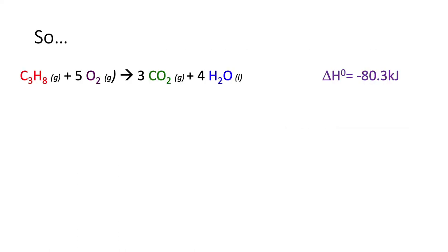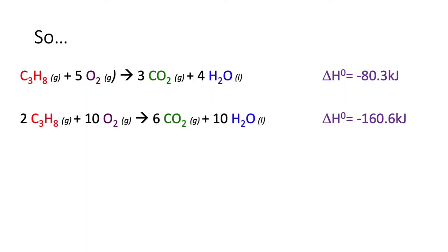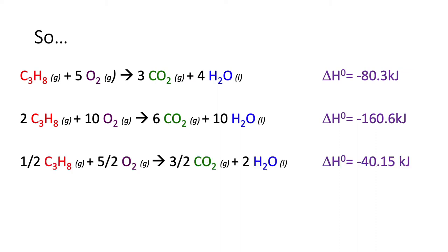Going back to the propane equation—one mole of propane reacting with five moles of oxygen to give three moles of carbon dioxide and four moles of water—the enthalpy of this reaction is negative 80.3 kilojoules. But if you have twice as much of everything, starting with two moles of propane reacting with ten moles of oxygen to give six moles of carbon dioxide and ten moles of water, that gives you twice as much heat energy: negative 160.6 kilojoules.